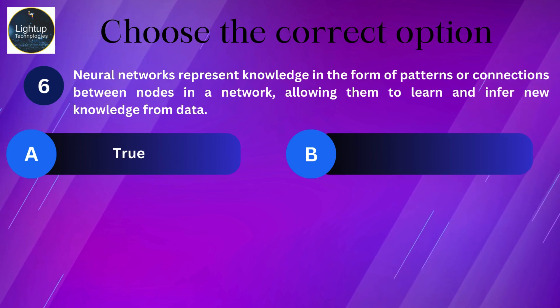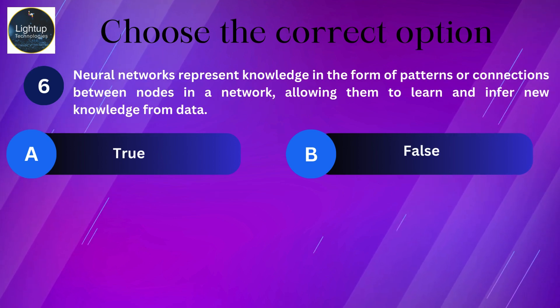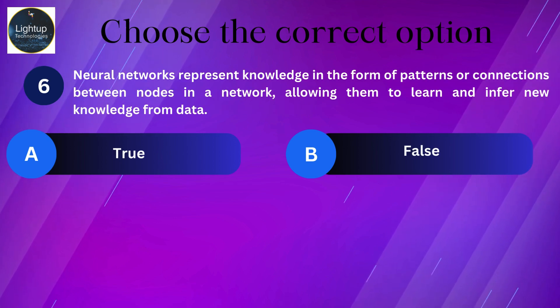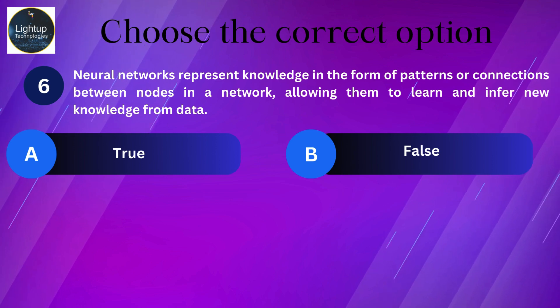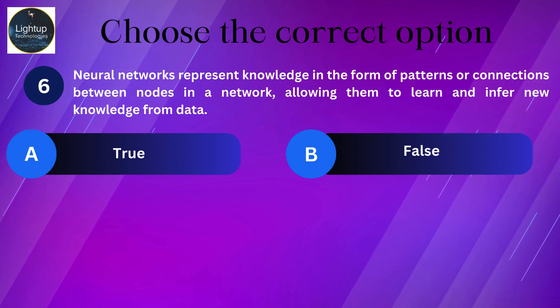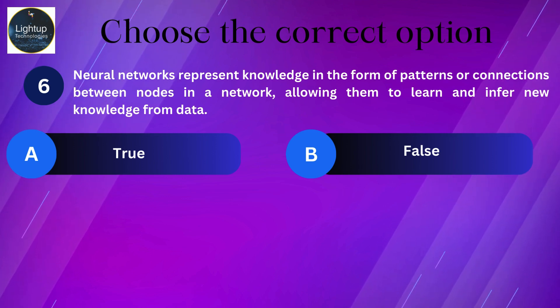Neural networks represent knowledge in the form of patterns or connections between nodes in a network, allowing them to learn and infer new knowledge from data.